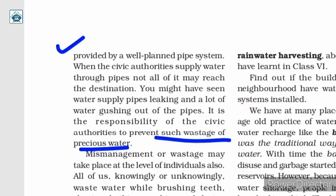Generally, the civic authorities of a region are responsible for the supply of water in that area. They use a well-structured pipeline system to deliver water to every house and building of the locality. It is also the responsibility of civic authorities to prevent wastage of water and check if the supply of water is adequate. It is our responsibility as well to ensure that precious water is not wasted.